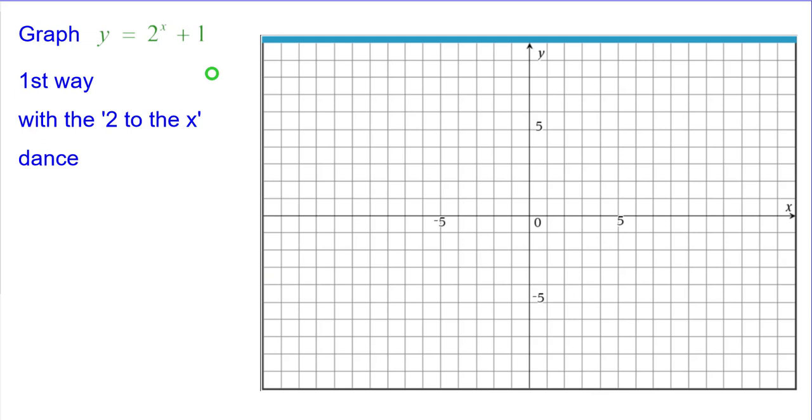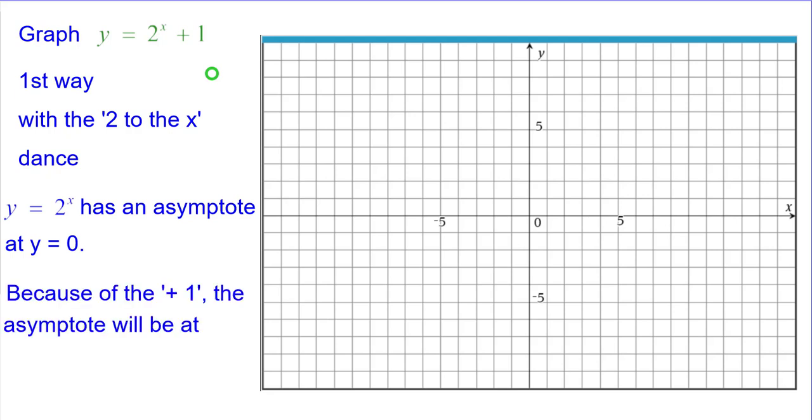The first way is we're going to graph with what I call the 2 to the x dance. And normally y equals 2 to the x has an asymptote at y equals 0. But because of the plus 1 in the equation, the asymptote is going to be at y equals 1. So we'll go ahead and graph y equals 1.